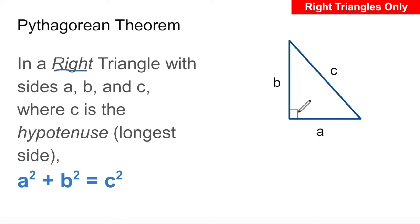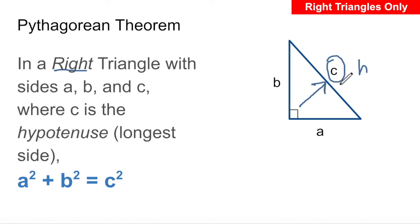The hypotenuse is always going to be directly opposite the right angle. You'll typically see the hypotenuse labeled as either c or h.